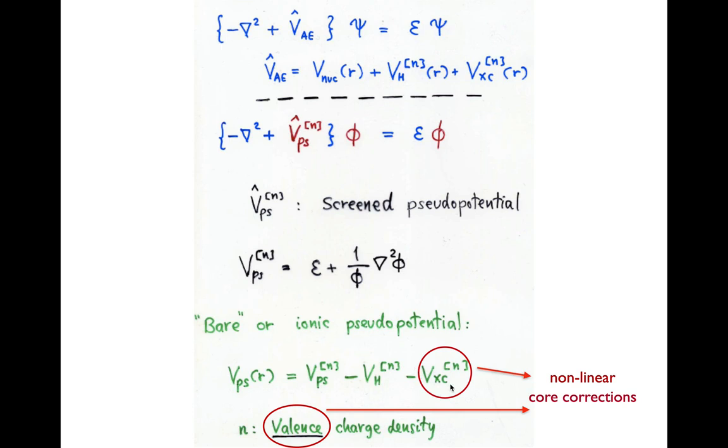because this term is non-linear in the charge density, and in some cases you need to take into account some model for the core charge to do the unscreening correctly, particularly for magnetic systems. This is the subject of non-linear core corrections.